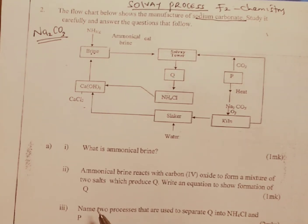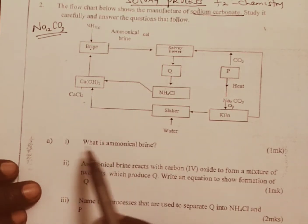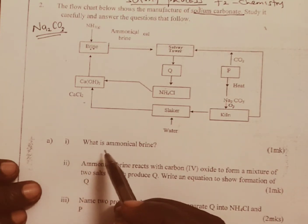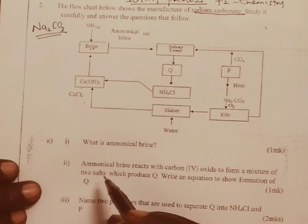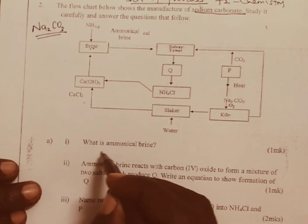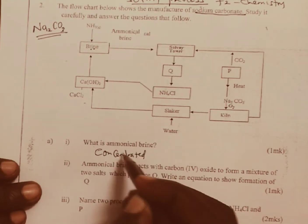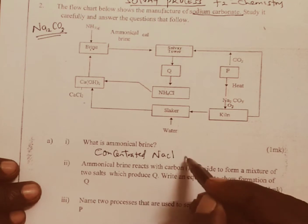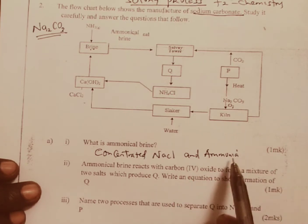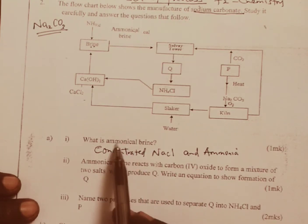The first question is about ammoniacal brine — what is ammoniacal brine? Ammoniacal brine is a mixture of brine and ammonia. That is, it is concentrated sodium chloride and ammonia, or a mixture of ammonia and concentrated sodium chloride (brine), which gives us ammoniacal brine.